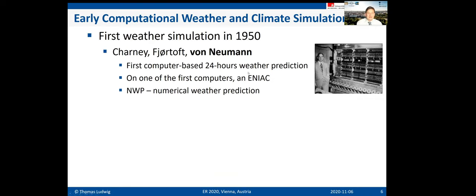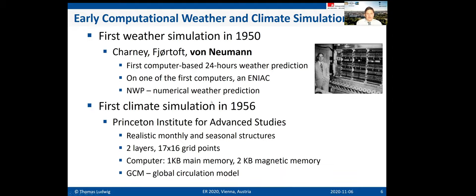That was 1922. Of course it was not possible to implement, and it took quite some years until we had a real weather simulation on a computer. It was only in 1950 that we see this for the first time — the first weather simulation done by Charney, Fjørtoft, and von Neumann, one of the fathers of computer science. They ran it on ENIAC; remember the first computer invented by Konrad Zuse was in 1941.